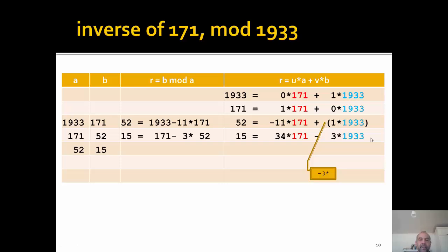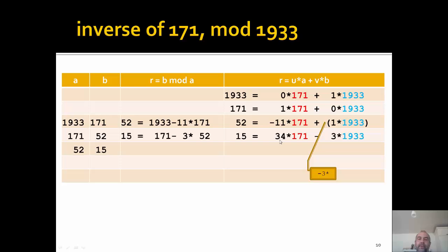To make sure you are not making a mistake, you can simply calculate this on a calculator: do 34 times 171 minus 3 times 1933, and if you did it right the result should be 15. If you made a mistake and wrote a plus instead of a minus, then the result would certainly be bigger than 15, so that cannot be right. Just calculate it on your calculator and check that it's really 15.